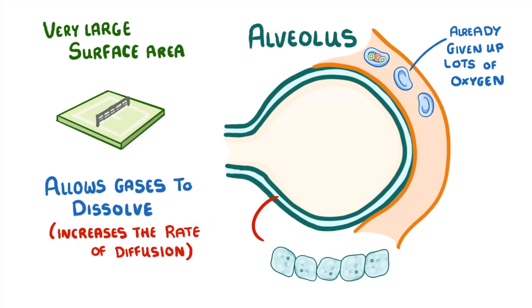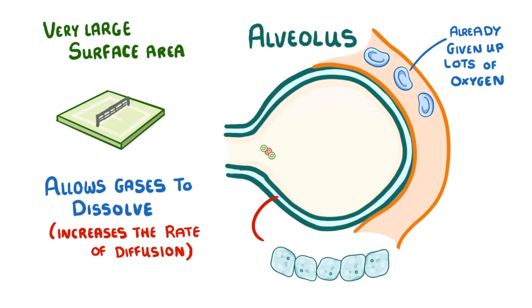Carbon dioxide, on the other hand, will be at a higher concentration in the blood than in the alveoli, so it can easily diffuse across. Once in the alveoli we can just breathe it out. It's important to remember that carbon dioxide isn't actually carried by red blood cells like oxygen is — it's just dissolved in the blood plasma.